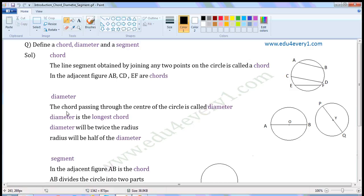Diameter. The chord passing through the center of the circle is called a diameter. In the adjacent figure, AB is a chord passing through the center of the circle, O. So, AB is called diameter.